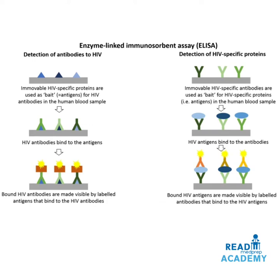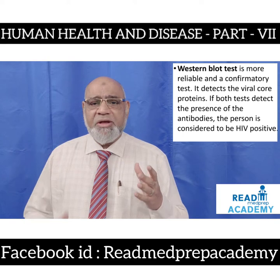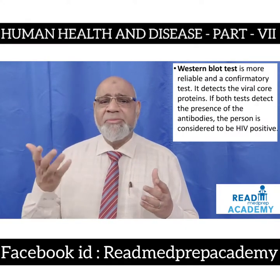On the detection of HIV-specific proteins side, immobilized HIV-specific antibodies are used as bait for HIV-specific proteins in the human blood sample. HIV antigens bind to the antibodies, and the bound HIV antigens are made visible by labeled antibodies that bind to the HIV antigens. This is the Enzyme-Linked Immunosorbent Assay, or ELISA test. The Western Blot test is a more reliable and confirmatory test for HIV — it detects the viral core proteins. If both tests detect the presence of antibodies, the person is considered HIV positive.